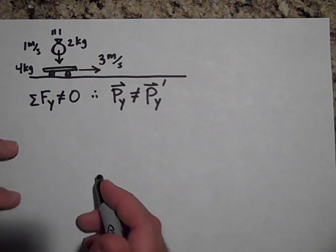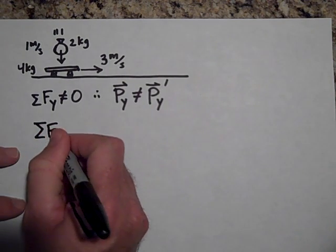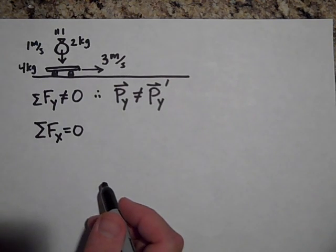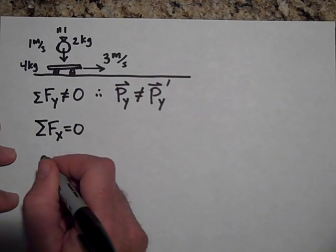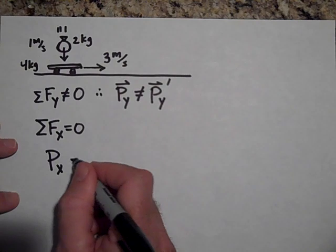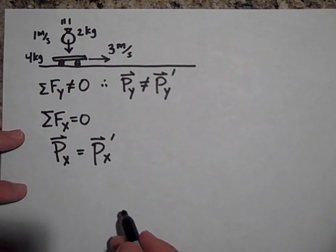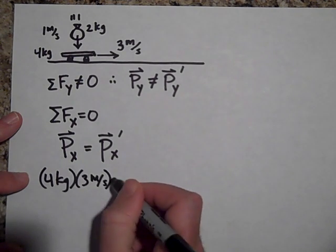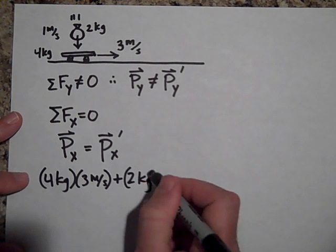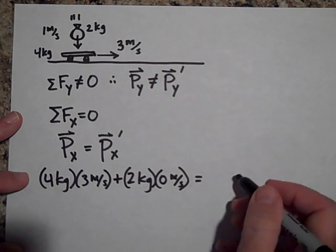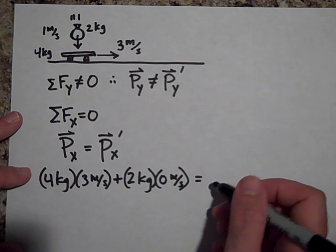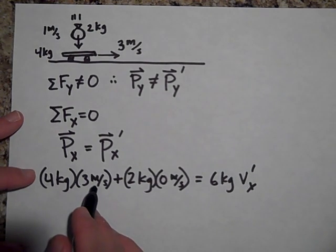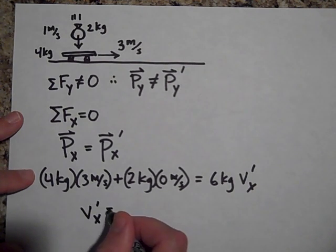But that doesn't stop us from analyzing the x-direction. In the x-direction there is no net force — the sand and cart forces are internal to our system. So momentum in the x-direction before equals momentum in the x-direction after. That's four kilograms times three meters per second, plus the sandbag's two kilograms with no x-velocity, equal to six kilograms times vx prime. That gives twelve divided by six, so vx prime equals two meters per second.